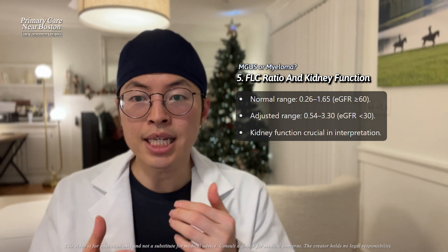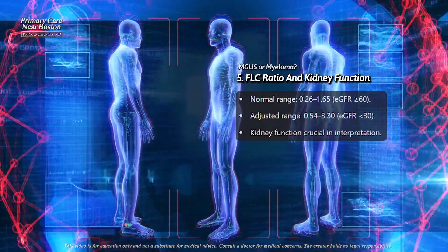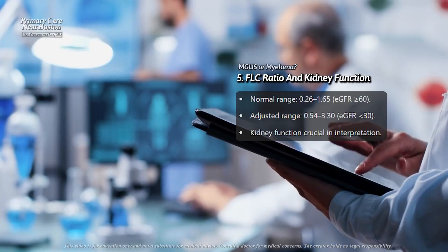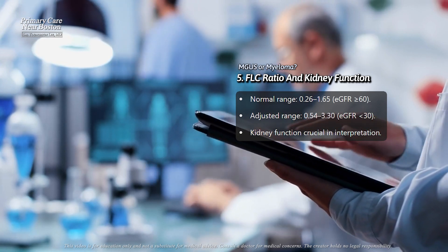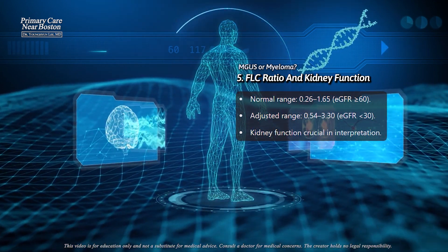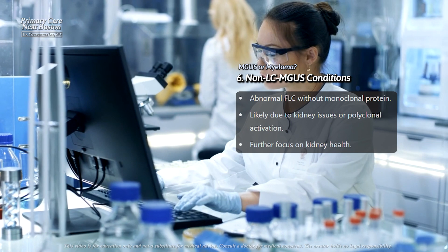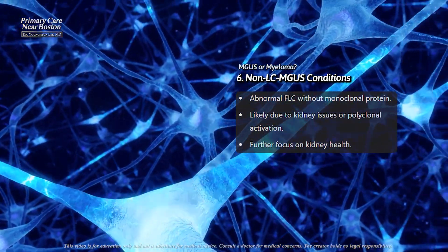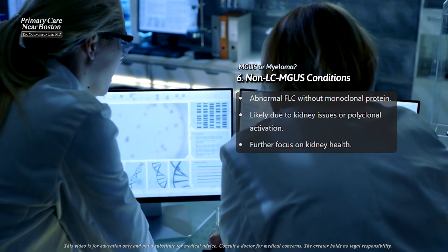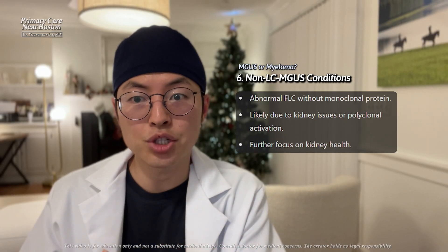In interpreting the FLC ratio, kidney function is a crucial factor, as kidney impairment can affect these measurements. Reference ranges for the FLC ratio vary based on kidney health, with a typical normal range of 0.26 to 1.65 for individuals with an eGFR of 60 or higher. In cases of moderate to advanced kidney impairment, such as an eGFR below 30, the expected range shifts to 0.54 to 3.30. An abnormal FLC ratio without an increased light chain concentration or a monoclonal heavy chain is not usually considered LC-MGUS; abnormal ratios in such cases likely indicate kidney impairment or polyclonal immune activation, and further testing would focus on kidney function rather than plasma cell disorders.